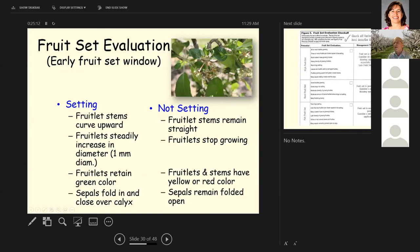So when you're evaluating your fruit set, you'll look at the fruitlet stems. Here's the fruitlet stem over here. If that fruitlet stem is curving upward, it looks like it's going to set. The fruitlets will steadily increase in diameter. Fruitlets retain their green color and the sepals, these little protrusions at the base of the flower will curve over top of the calyx when the fruit is going to set. If it's not setting, the fruit stems will remain straight, like in this photo here, they'll stop growing. They'll turn a little reddish or yellowish color. You can see this one's turning a little reddish. This one looks a little bit yellowish over here and the sepals remain folded backwards.